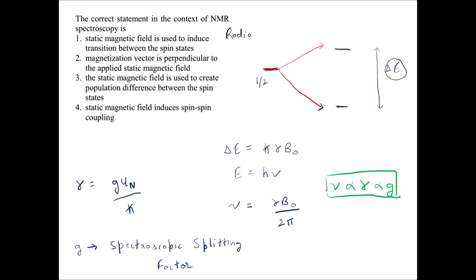If I increase the magnetic field, the energy gap between the two states increases. The radio frequency I provide is responsible for carrying atoms from the lower energy state to the upper energy state — that transition is caused by the radio frequency. The gap that originates, however, is because of the magnetic field. The statement that static magnetic field induces spin-spin coupling is also absolutely incorrect.